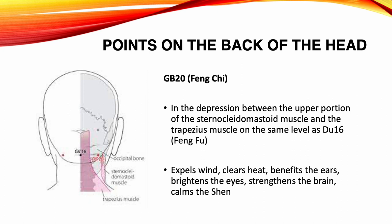Gallbladder 20. Location: in the depression between the upper portion of the sternocleidomastoid muscle and the trapezius muscle, on the same level as Du 16. Functions: expels wind, clears heat, benefits the ears, brightens the eyes, strengthens the brain, calms the shen. Indications: headache, dizziness, stiffness of the neck, tinnitus, deafness, nasal obstruction, nosebleeds, cold, insomnia, poor memory, seizures, mental disorders, paralysis.